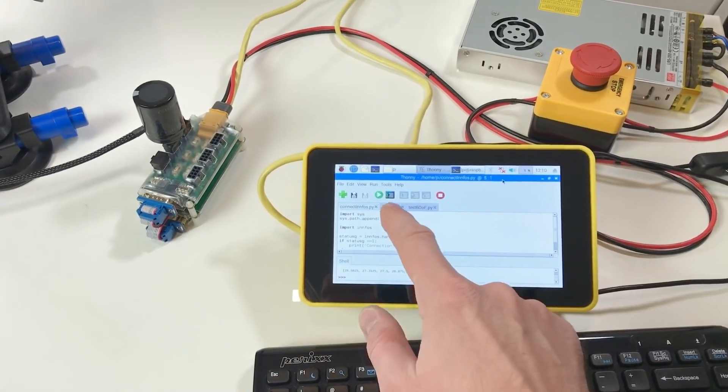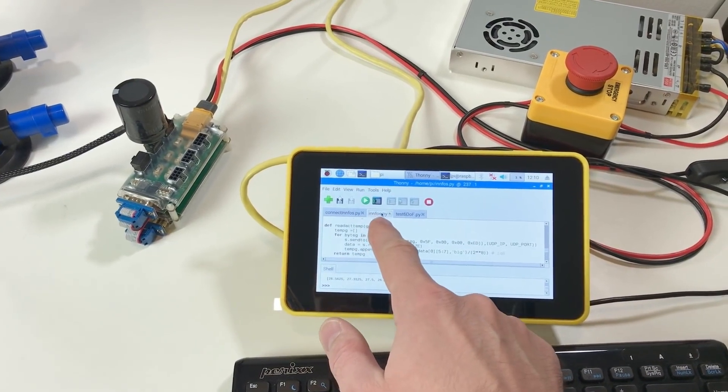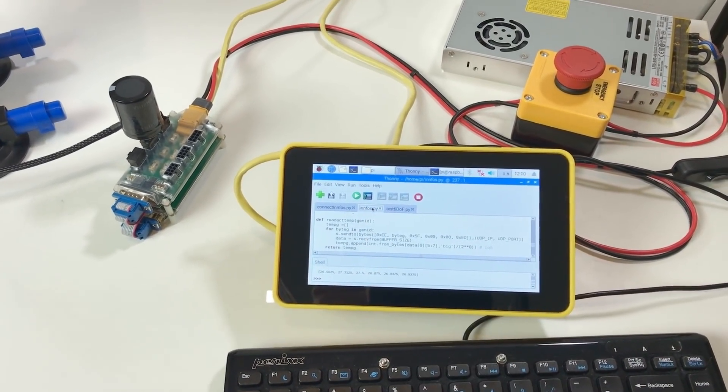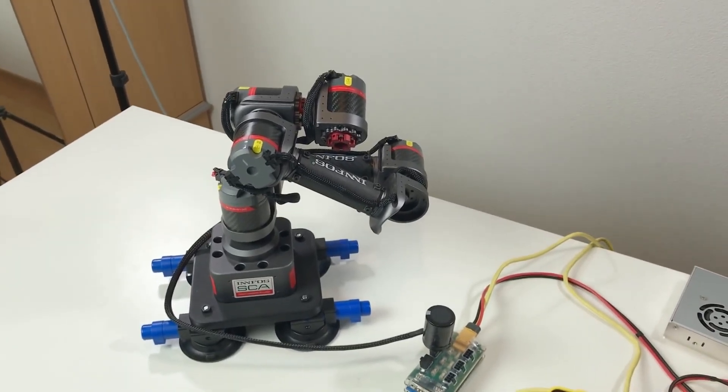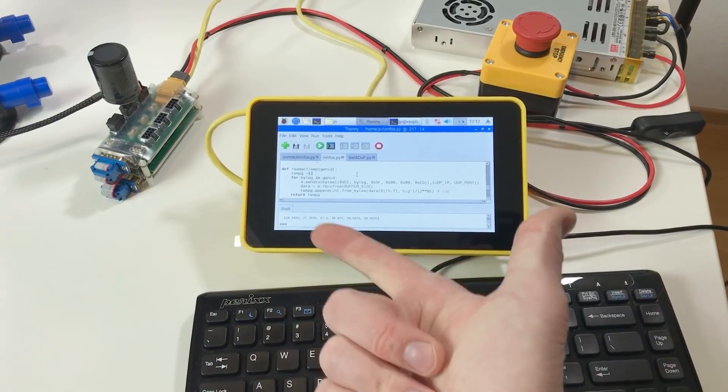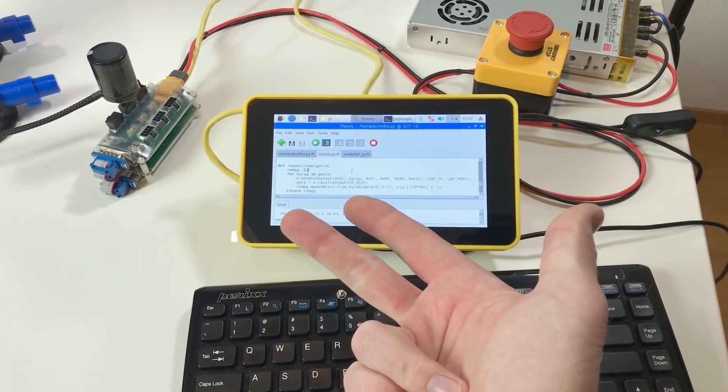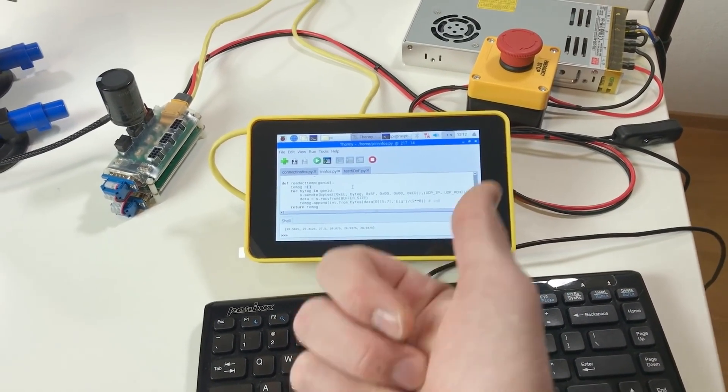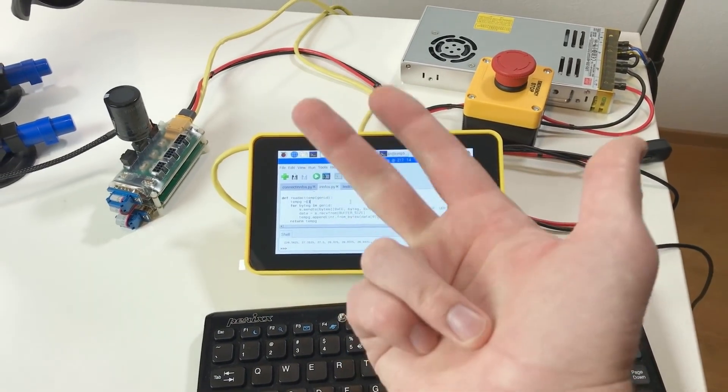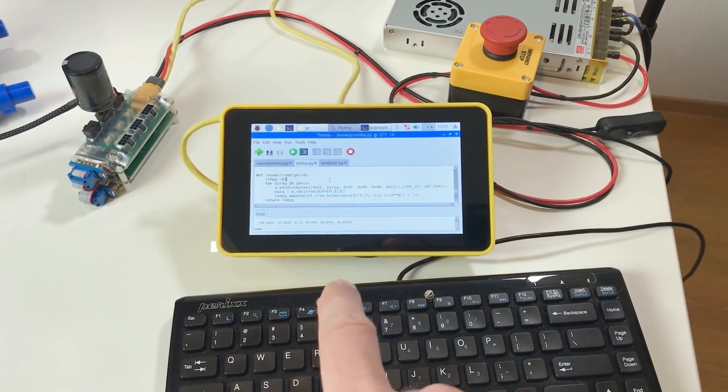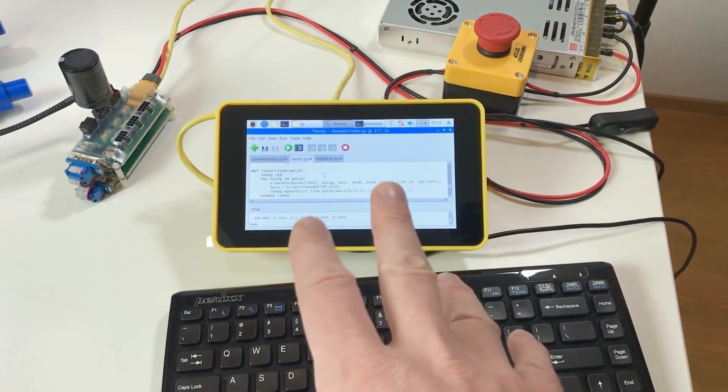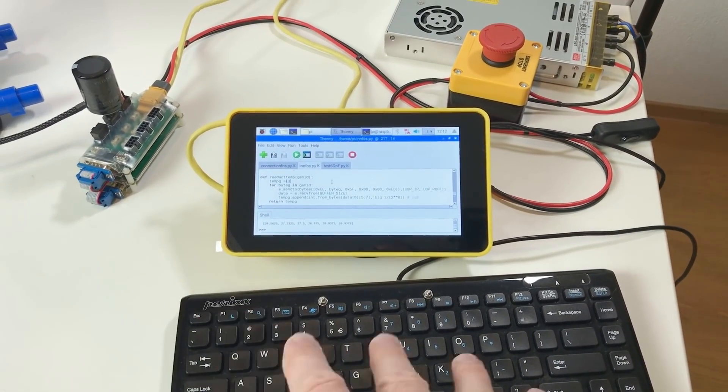Last couple of days I spent writing this module which I called Infos.py. And with this module you can do different things with the robot or with single actuators. Enable actuator, disable actuator, change the position, check the position, check the temperature, change the acceleration, change the maximum speed and stuff like this. And also using this module you can easily modify it to make your own commands.